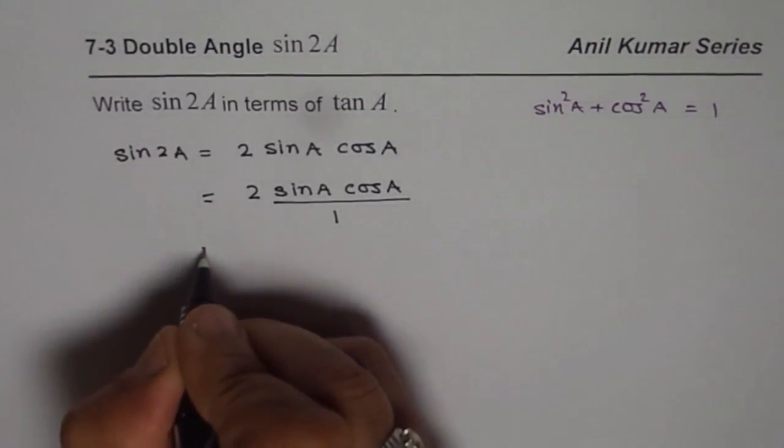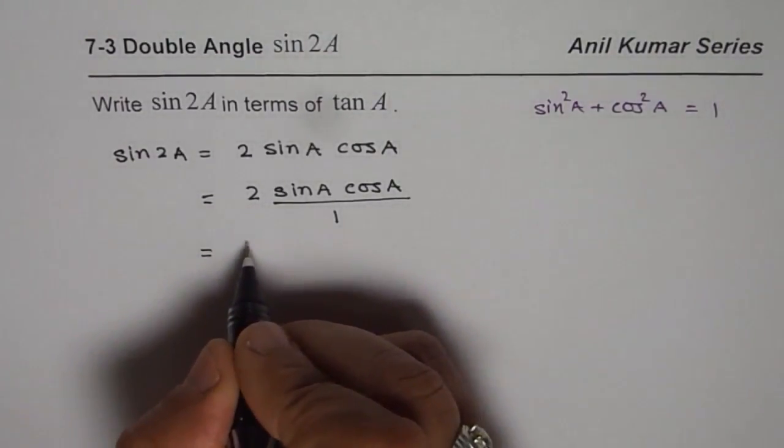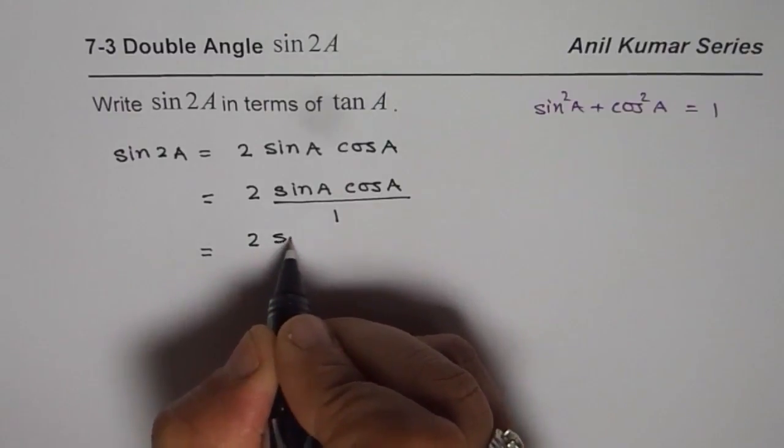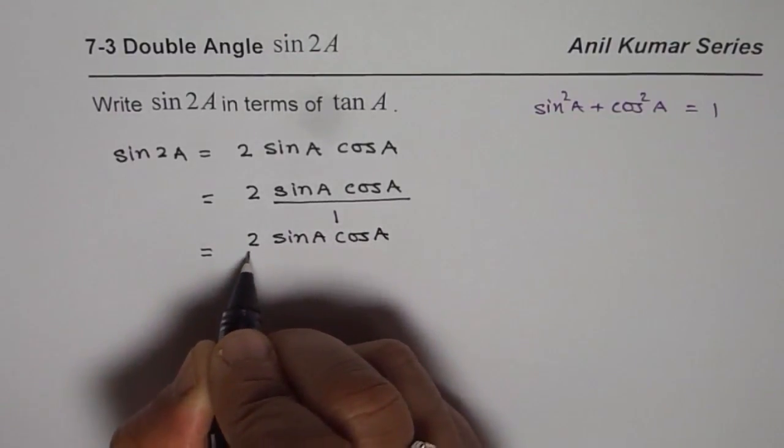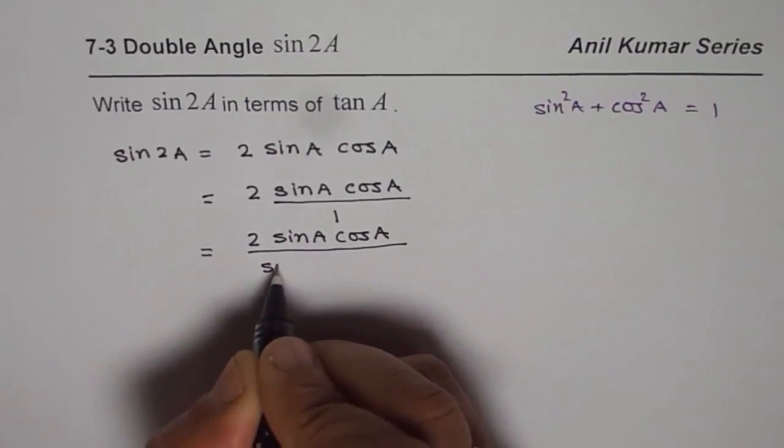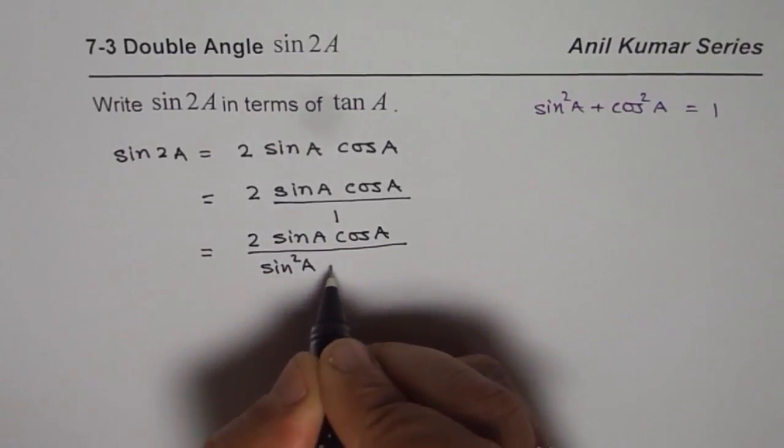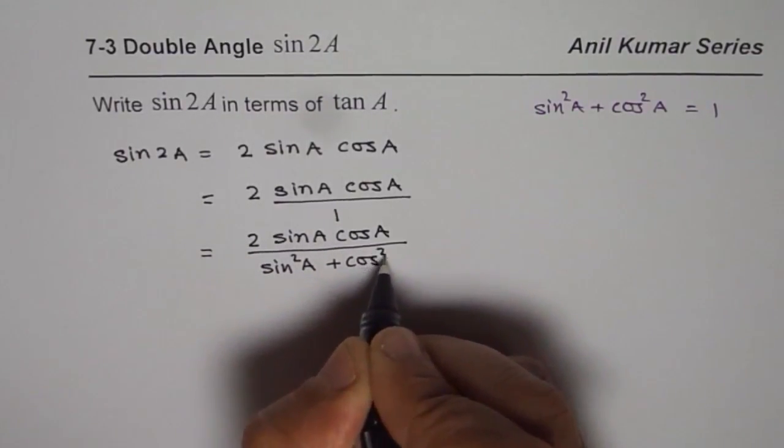Then we can write our right hand side as 2 sine A cos A divided by sine square A plus cos square A. Correct.